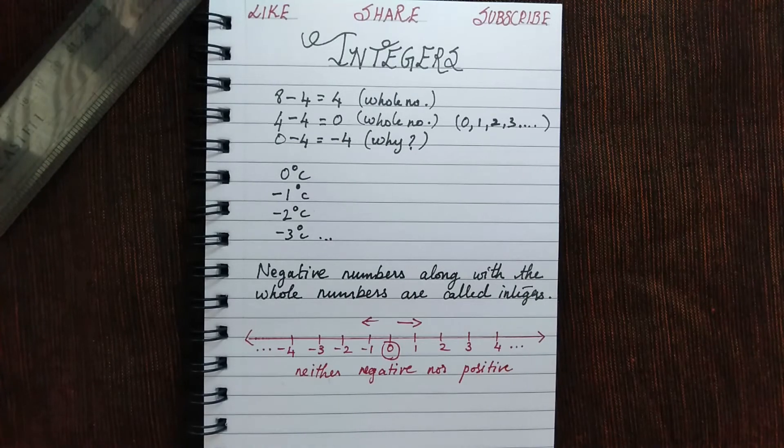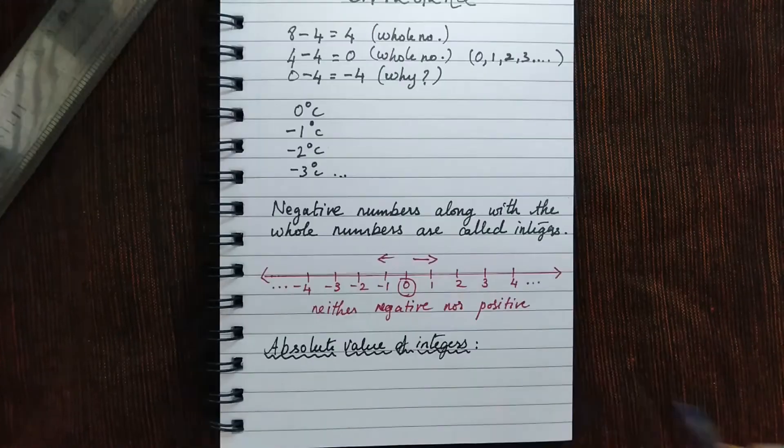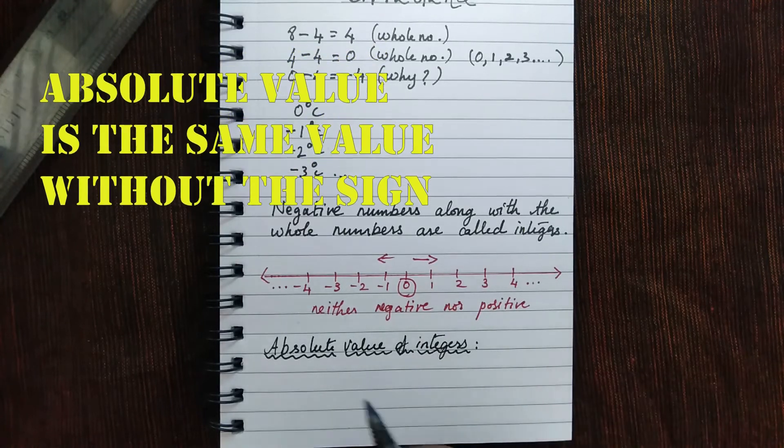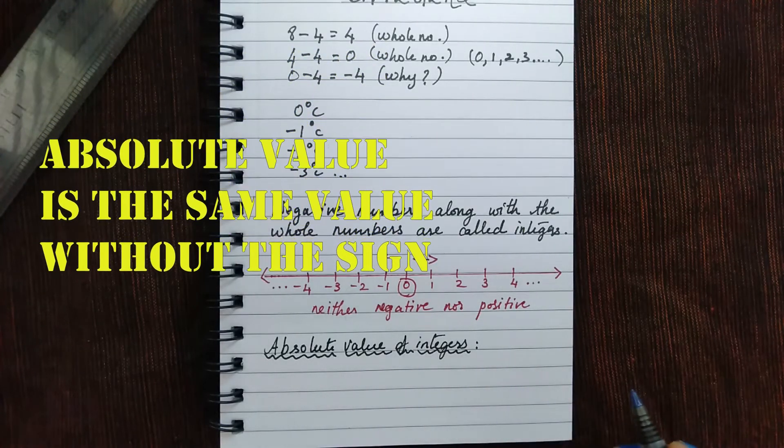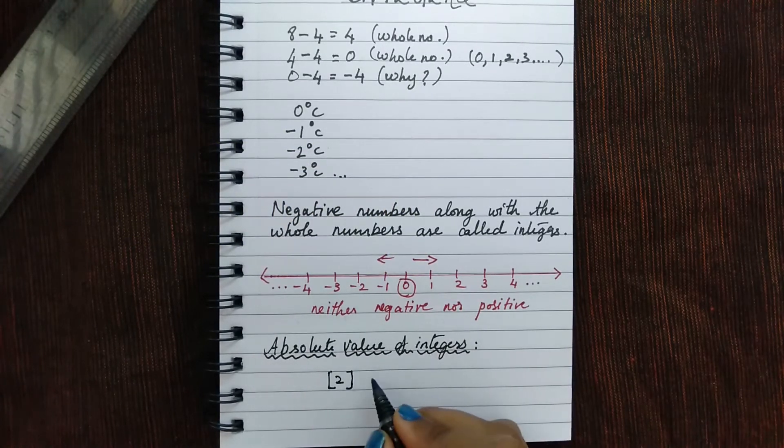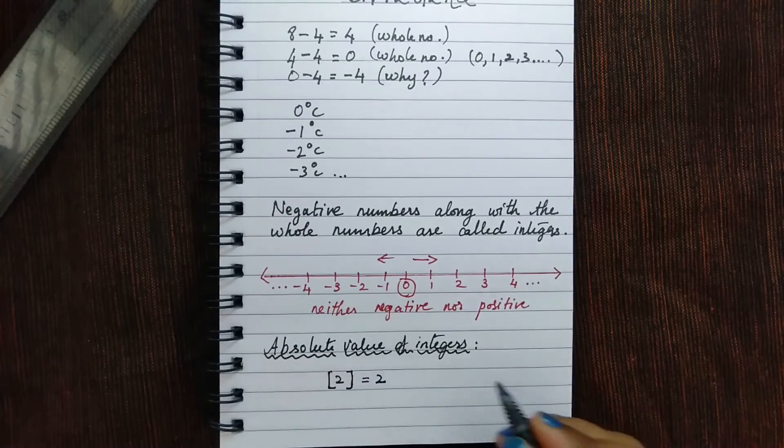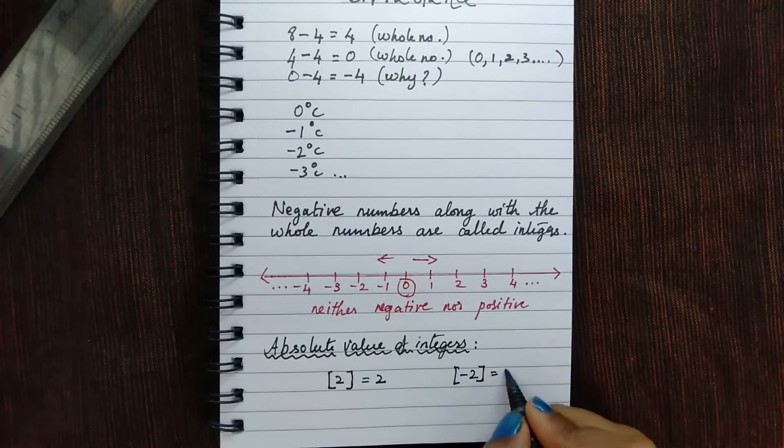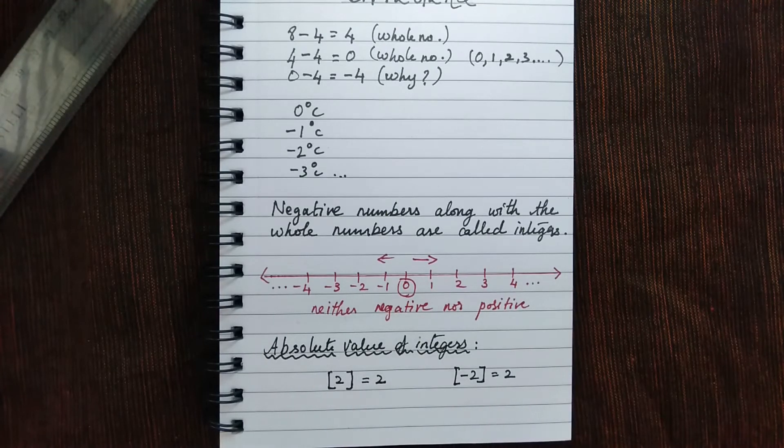Now let's move on to the absolute value of integer. Absolute value means the numerical value of integers. So the absolute value of integers remains the same regardless of a sign. So a positive 2, the absolute value is 2, and the absolute value of a negative 2 is also 2.